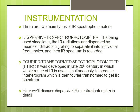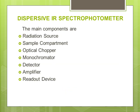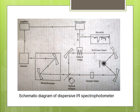In this video we will discuss in detail the dispersive IR spectrophotometer. Here are the main components: radiation source, sample compartment, optical chopper, monochromator, detector, amplifier, and readout device. Some parts like the sample compartment, optical chopper, and monochromator are the same as discussed in UV-visible spectrophotometer instrumentation, so you can watch that video for those components.